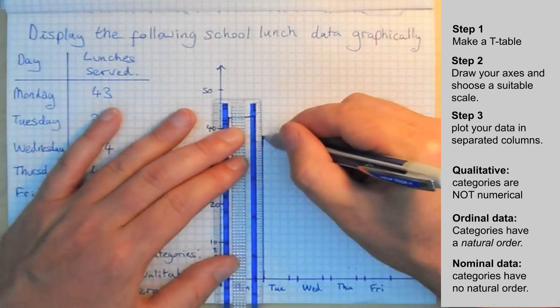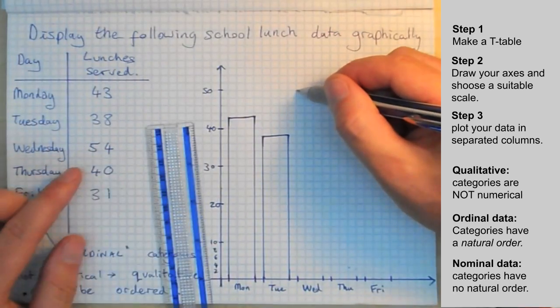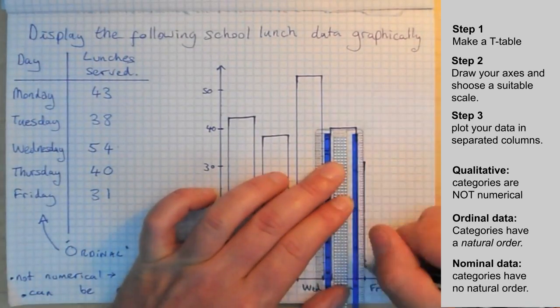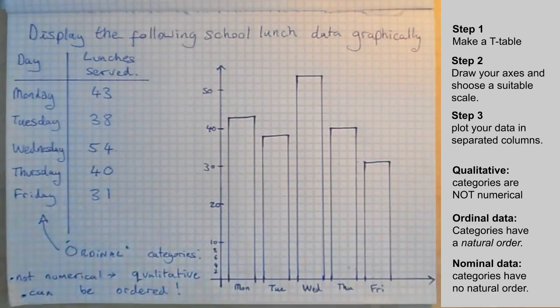Tuesday it's dead on at 38. Wednesday we mark at 54. Thursday we mark at 40. And Friday at 31.